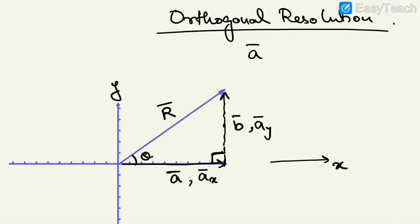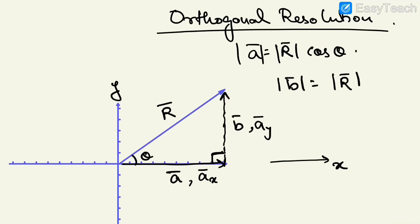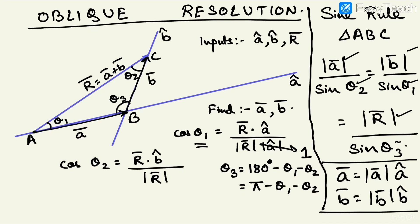In orthogonal resolution, if this angle is theta, then modulus of A equals modulus of R times cos(theta), and modulus of B equals modulus of R times sin(theta). These are the two perpendicular components. But this is not the most general method — the more general method is oblique resolution, which we have already learned.